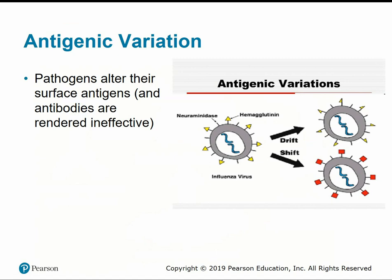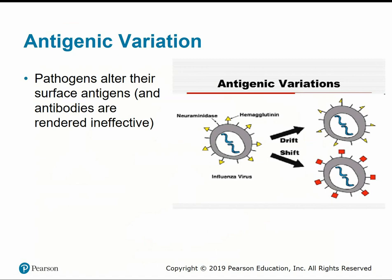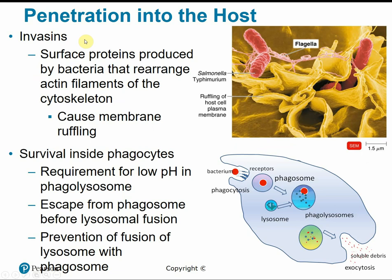Many pathogens use antigenic variation to alter their surface antigens and evade normal host defenses. Antibodies are specifically shaped to recognize and bind to specific antigens or proteins on the surface of pathogens. Many viruses and bacteria are able to mutate and change the shape of their surface proteins and antigens, rendering our antibodies ineffective. This is one reason why we have to get a new flu shot every year — it mutates, so antibodies from last year's flu shot no longer recognize this year's flu strain.